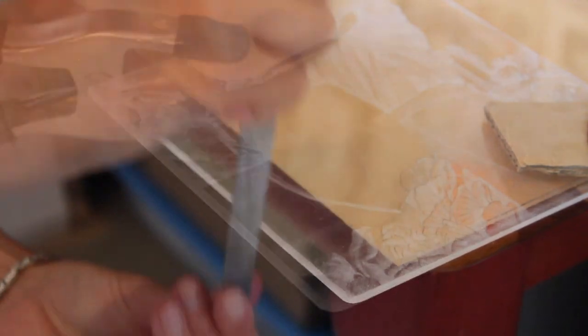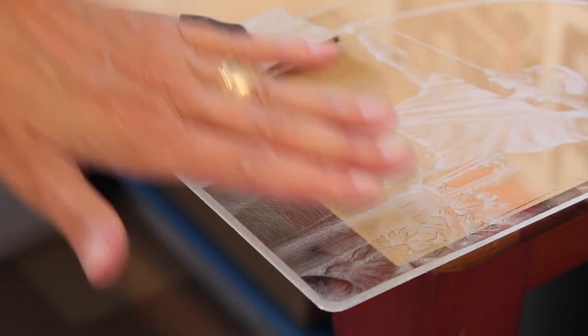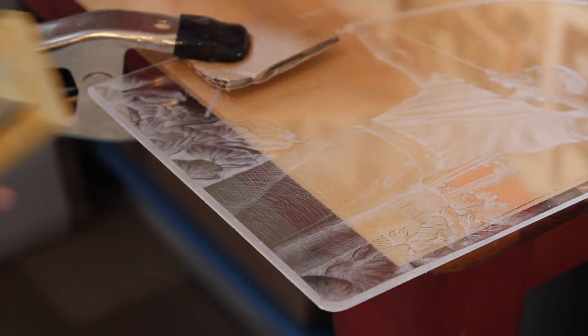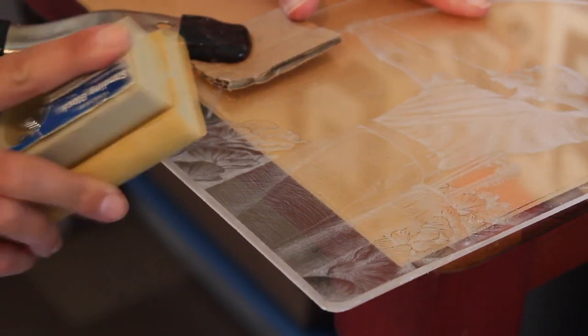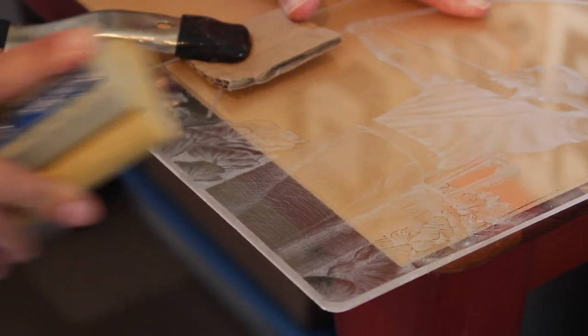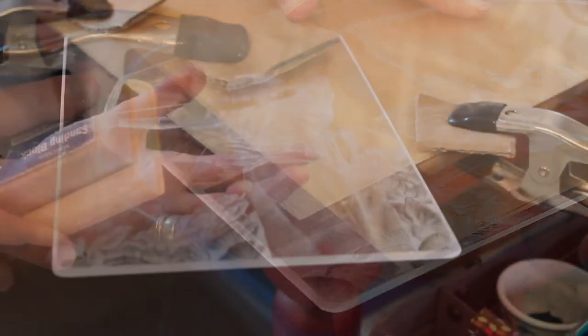After you've used the single cut file all the way around the plate you can switch to the sanding block with the 320 grit sandpaper. You'll see the stuff coming off the plate is even finer still so be careful to wear your respirator.